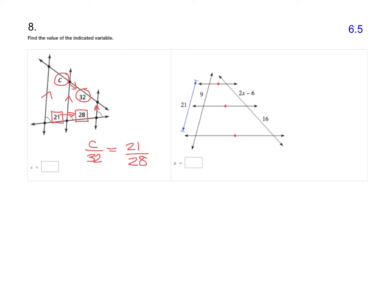Then we can solve it with a cross product. So C times 28 equals 32 times 21. And putting that into our calculator, we get 28C equals 672.